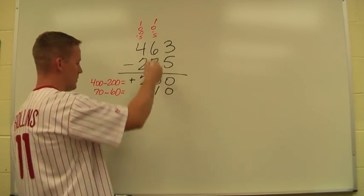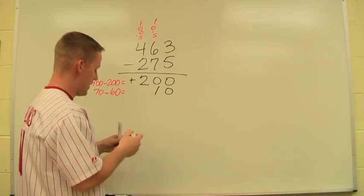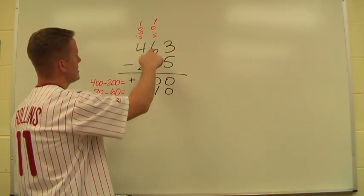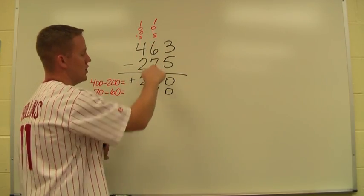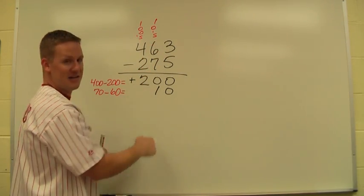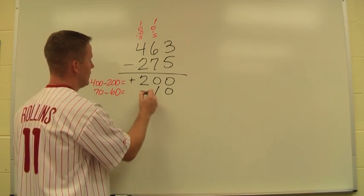And I line these up in columns. Once again, very important to line everything up. However, since the smaller number was on top, instead of this being a positive or a plus, it's going to be a negative or a subtraction.